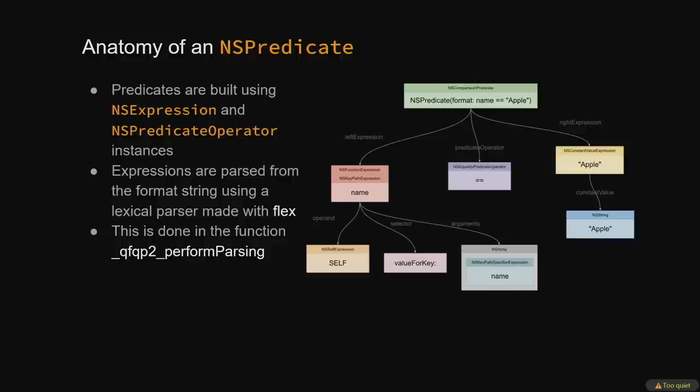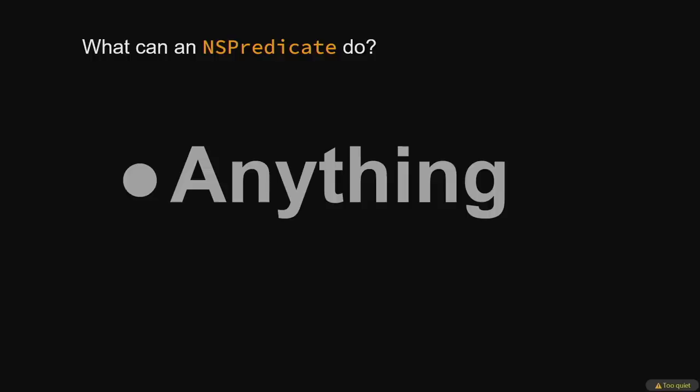This AST structure is complicated, but it's not really necessary to understand it. More important is the question of what can an NSPredicate do? The answer is anything — sort of. It used to be anything, but now there's a big asterisk, since Apple has taken many steps to make NSPredicates much less powerful and less useful for exploitation. Nearly all the techniques I'll talk about today no longer work as presented, but we'll look at NSPredicates as they were and at the limits of what could be done with them.